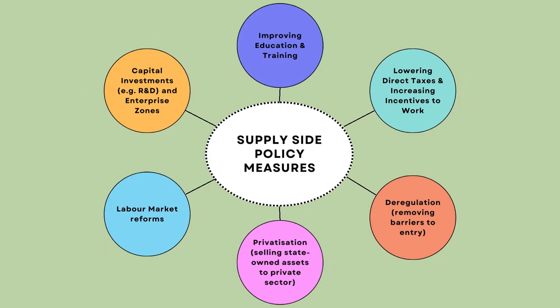Moving on to the supply-side policy measures. The first one is improving education and training. When this measure is implemented, it can increase the skills of workers, workers will become more productive, it will reduce the cost of production for firms, it can raise the quality of products, firms can sell more and it will also encourage firms to expand.